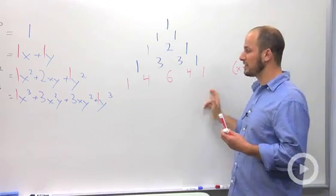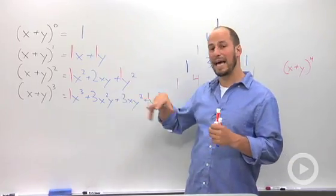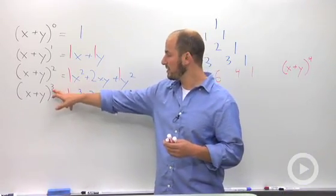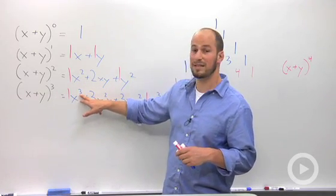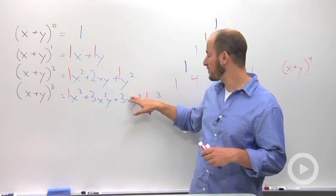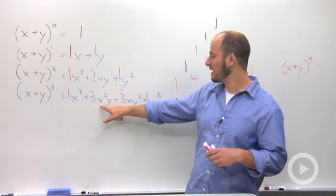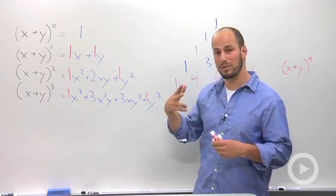And another thing we want to look at is we go back over here. The degrees are always adding up to the power that we started with. So for this example here, we have a cubic, a third degree. We start with x to the third, and our x slowly goes down one degree at a time, ending at x to zero, and our y slowly goes up. But even here when we have x squared y, our degrees add up to 3.